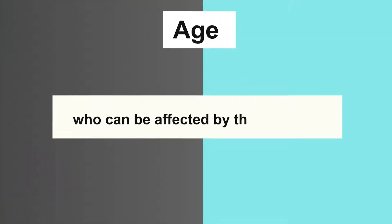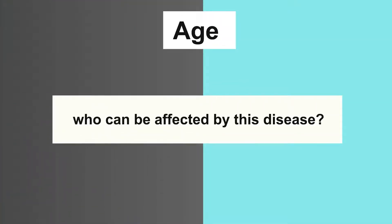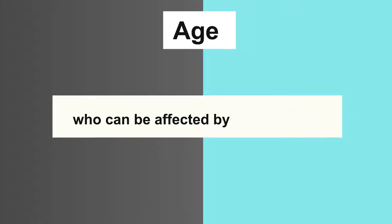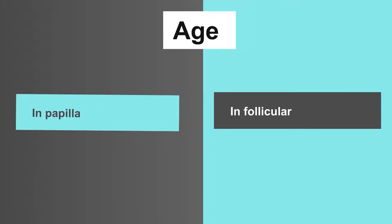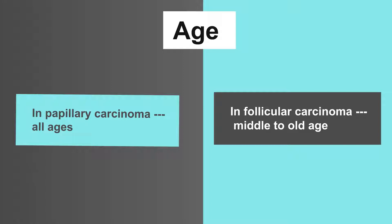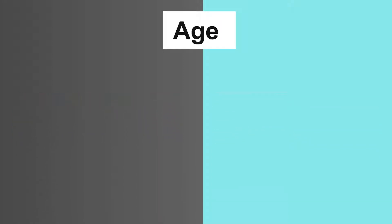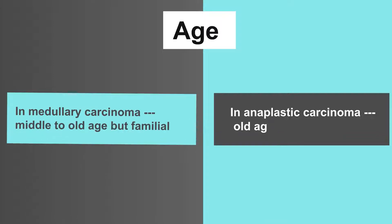Feature number two is age, which means who can be affected by this disease. In papillary carcinoma, all ages. In follicular carcinoma, middle to old age. In medullary carcinoma, middle to old age but familial too. In anaplastic carcinoma, old age.